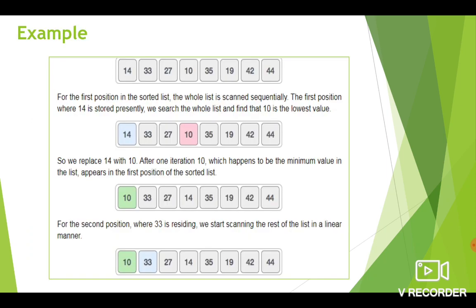Here is another example. The array contains the elements 14, 33, 27, 10, 35, 19, 42, 44. The first element is 14, so it is selected. It is compared with all the remaining elements. If any element is smaller than the selected element, then you have to do swapping. The smaller element found is 10, so you have to swap 10 and 14. Now the first iteration is completed.